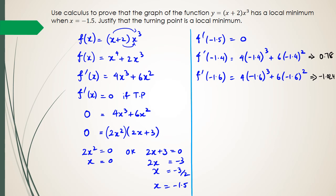Imagine the curve at negative 1.6, then negative 1.5, then negative 1.4. At x = -1.6 the gradient is negative 1.024, so the curve is sloping downward. At x = -1.5 the gradient is zero — that's the turning point. Moving towards x = -1.4 the gradient becomes positive 0.78, so the curve slopes upward. The gradient to the left of the point is negative and to the right is positive, shown by the green and purple colors, confirming it is a local minimum.